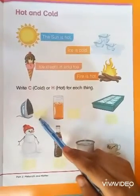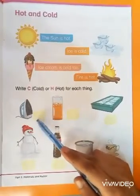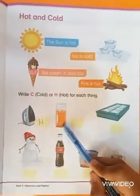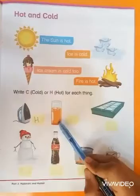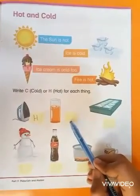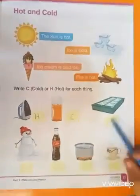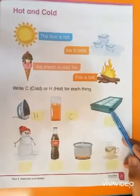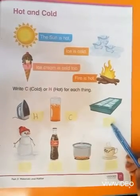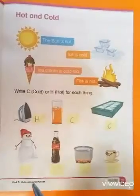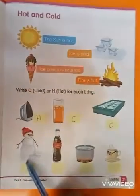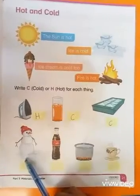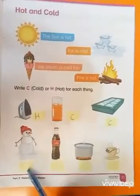Iron is hot, so we will write H here. Juice is cold, so write C in the box. Ice is cold, write C here. Snowman is cold, so we will write C here.